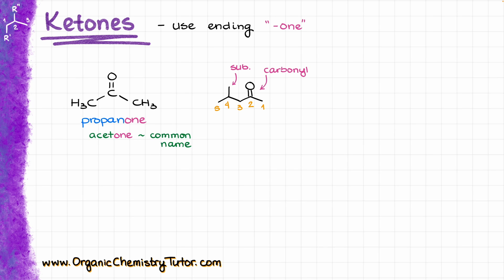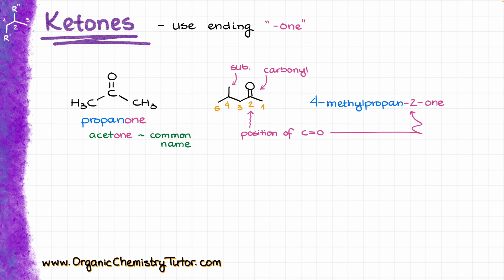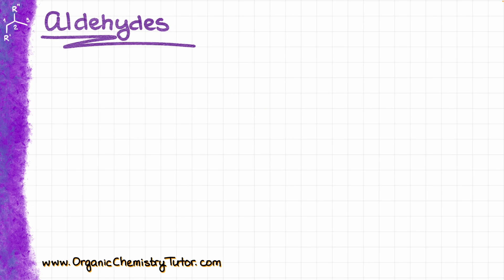Another thing to keep in mind is, like in the case with all other functional groups, we'll need to specify where exactly the carbonyl is in the molecule when it comes to its positioning. So, when I put my name together, we'll say that this is 4-methylpentane-2-one, and here the locant 2 specifies the position of the carbon with the carbonyl.